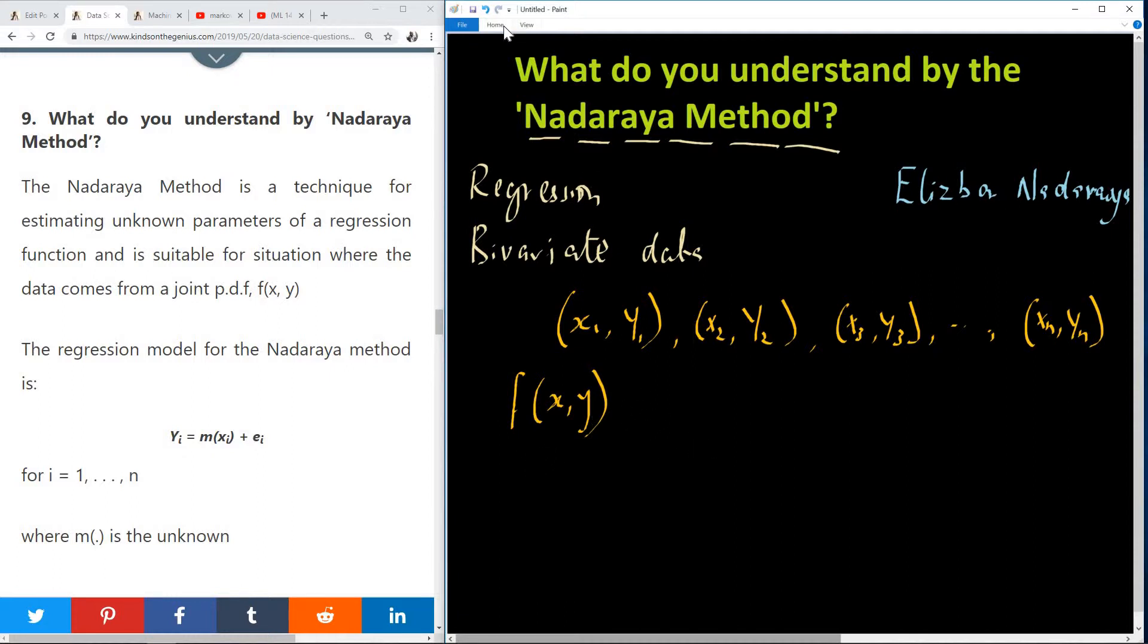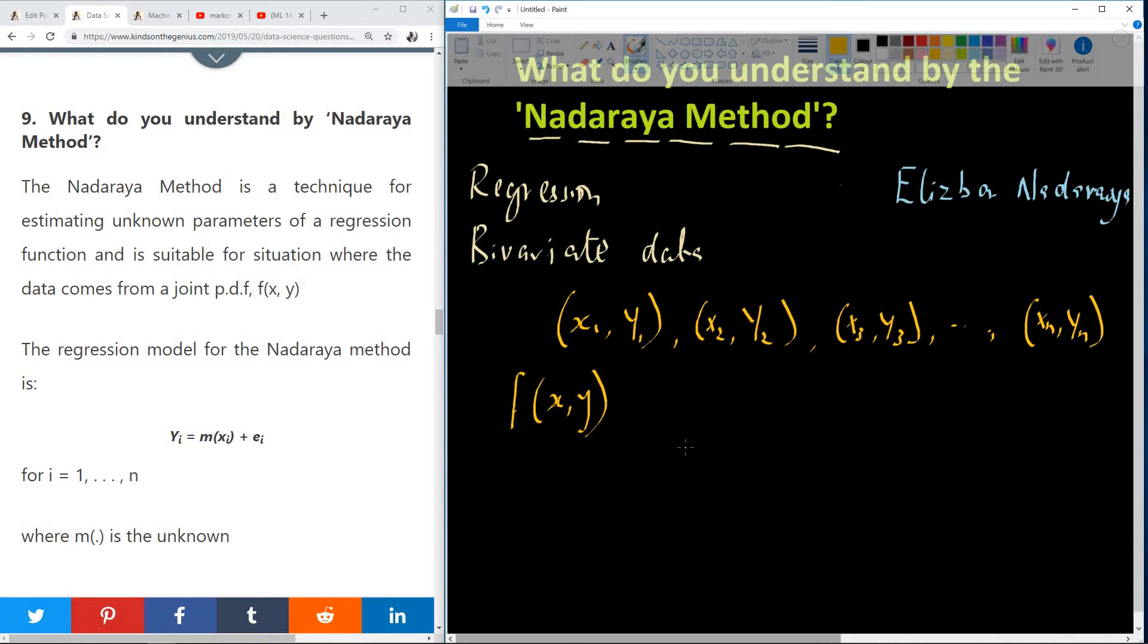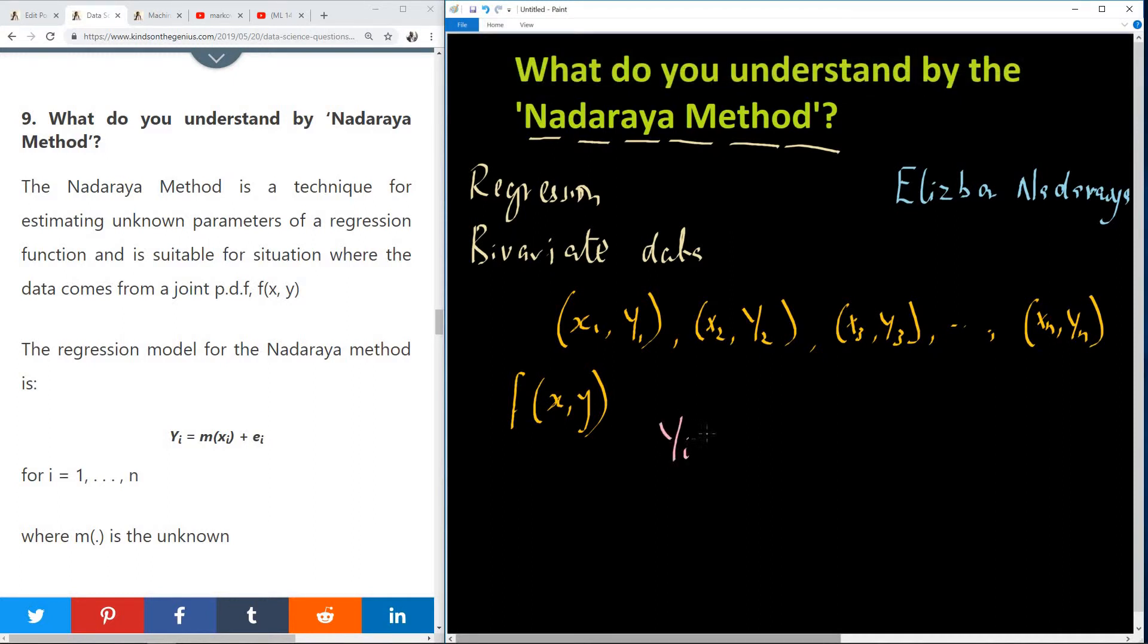So the model is something like this. I like changing the pane. So the model is something like this. yi is equal to m of xi plus some error, ei. Of course, you know that i is 1, 2, n. Now, this mi is unknown. So this function m is unknown.